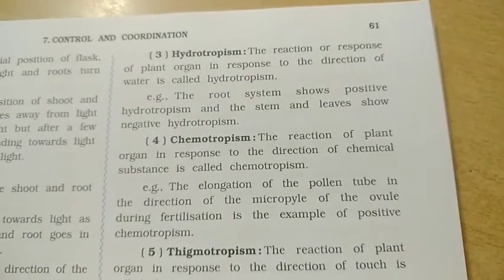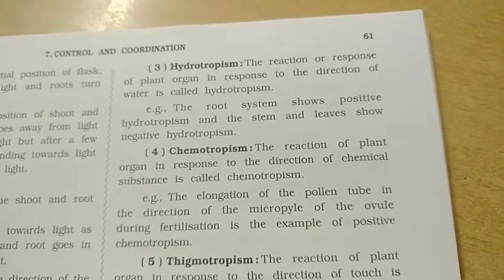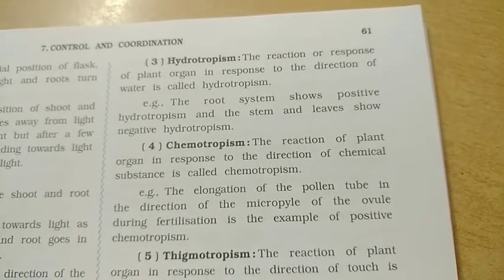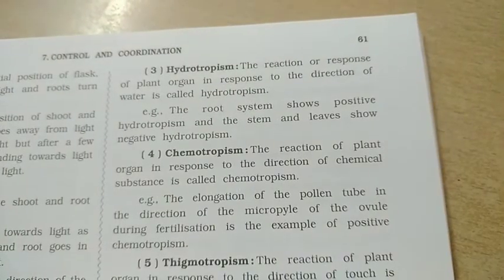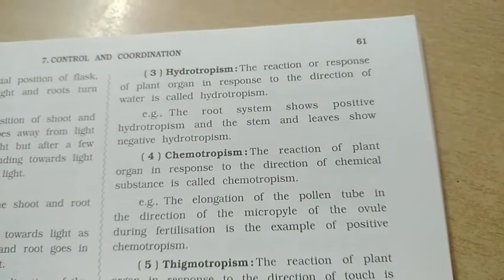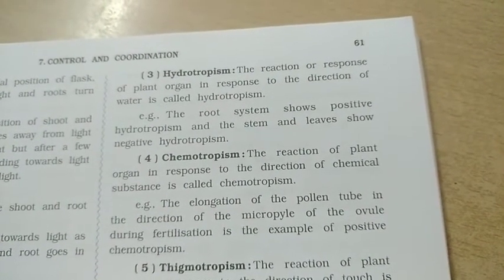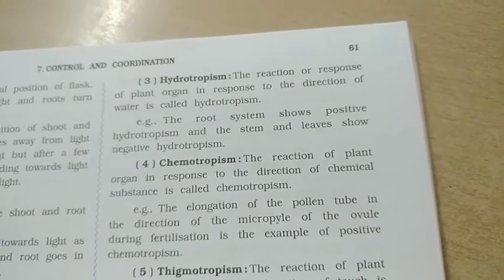Chemotropism is the reaction of the plant organ in response to the direction of a chemical substance. An example of positive chemotropism is the elongation of the pollen tube in the direction of the micropyle of the ovule during fertilization.